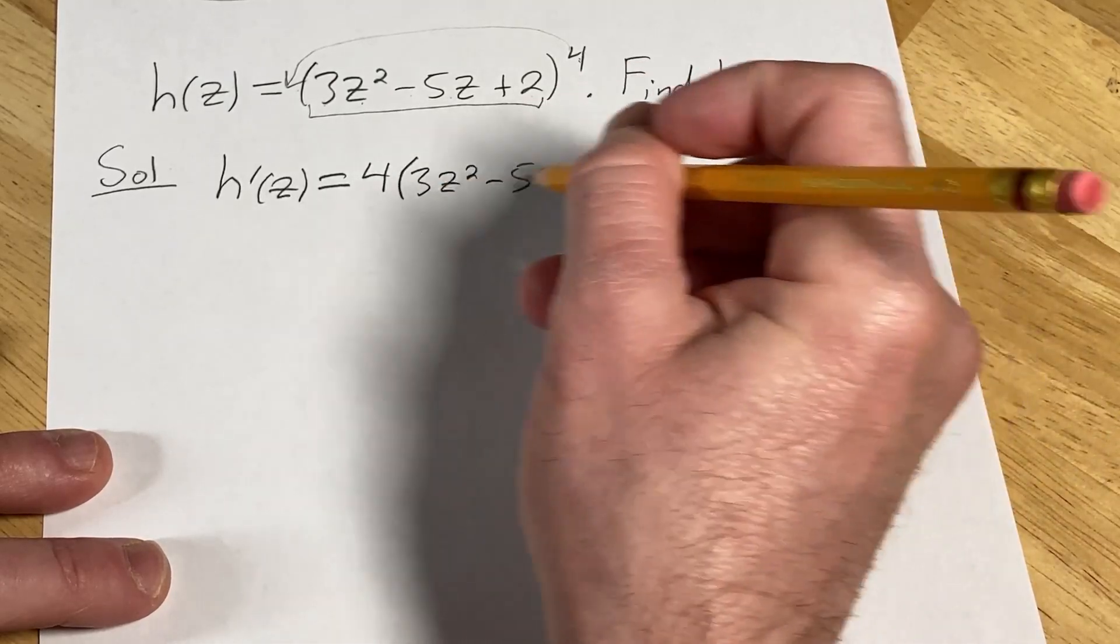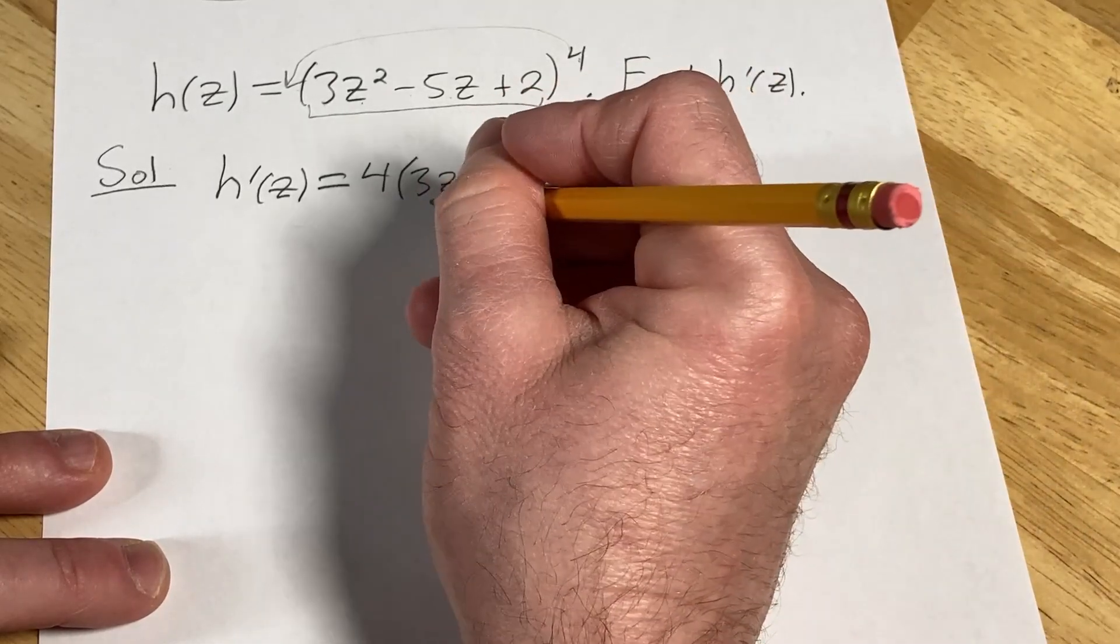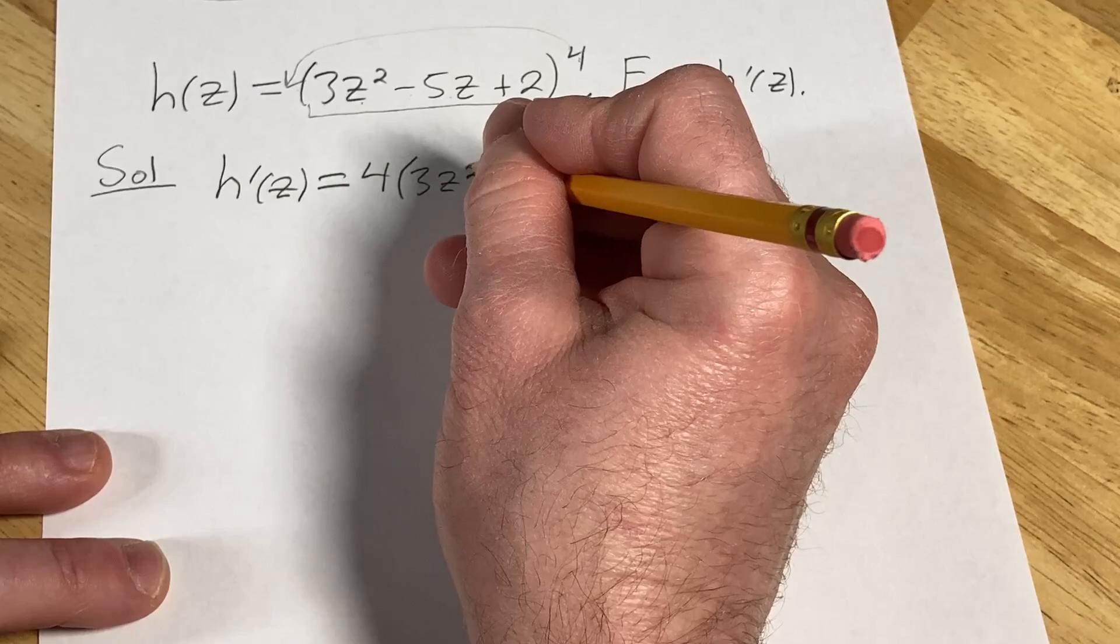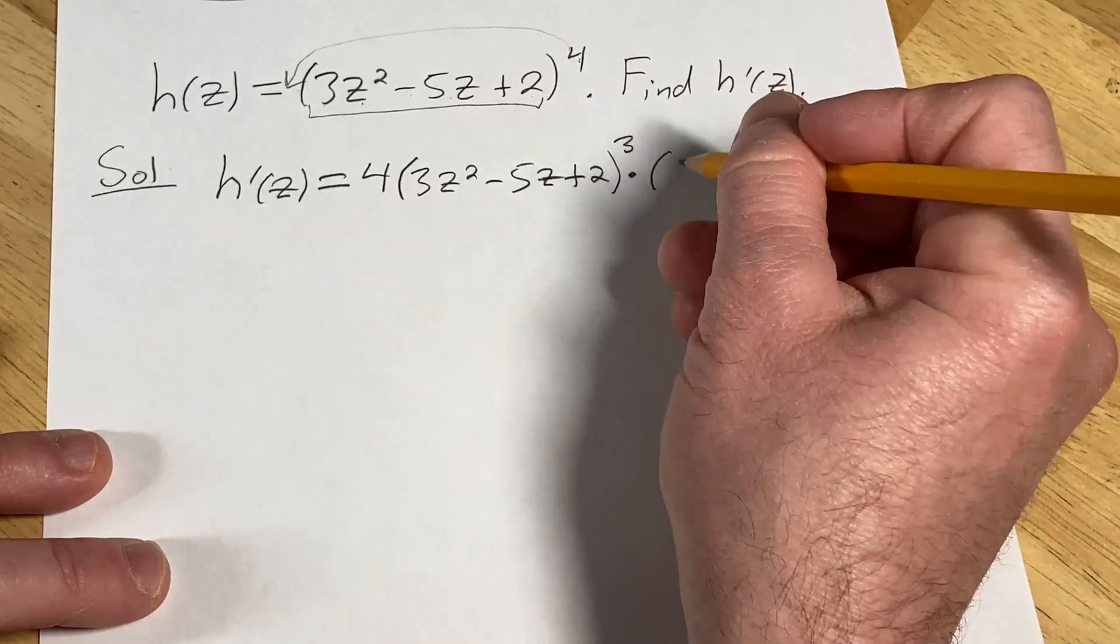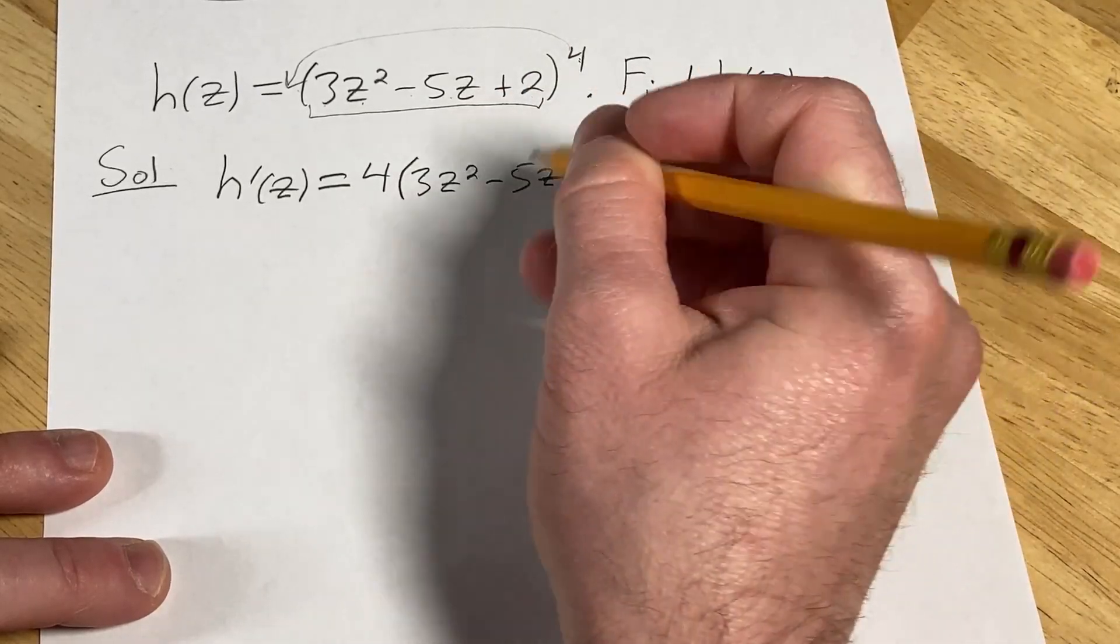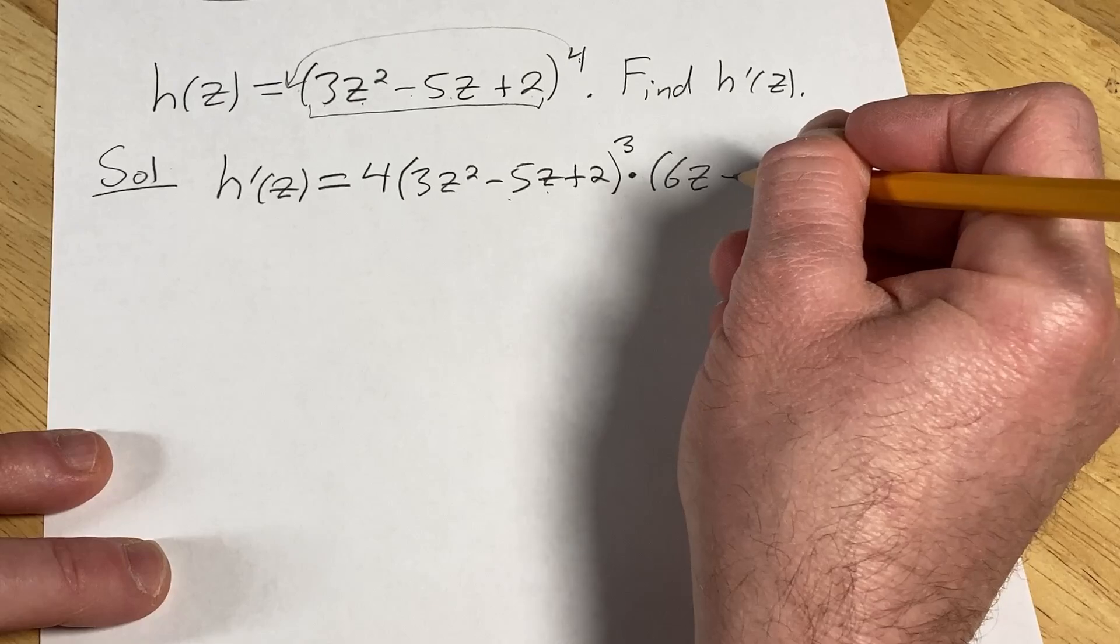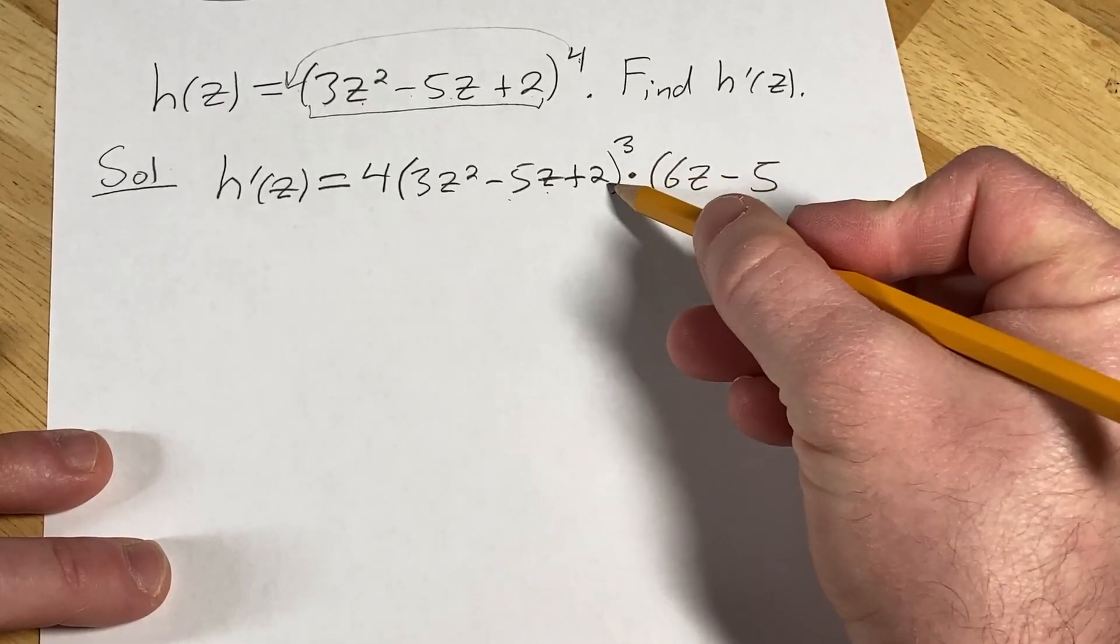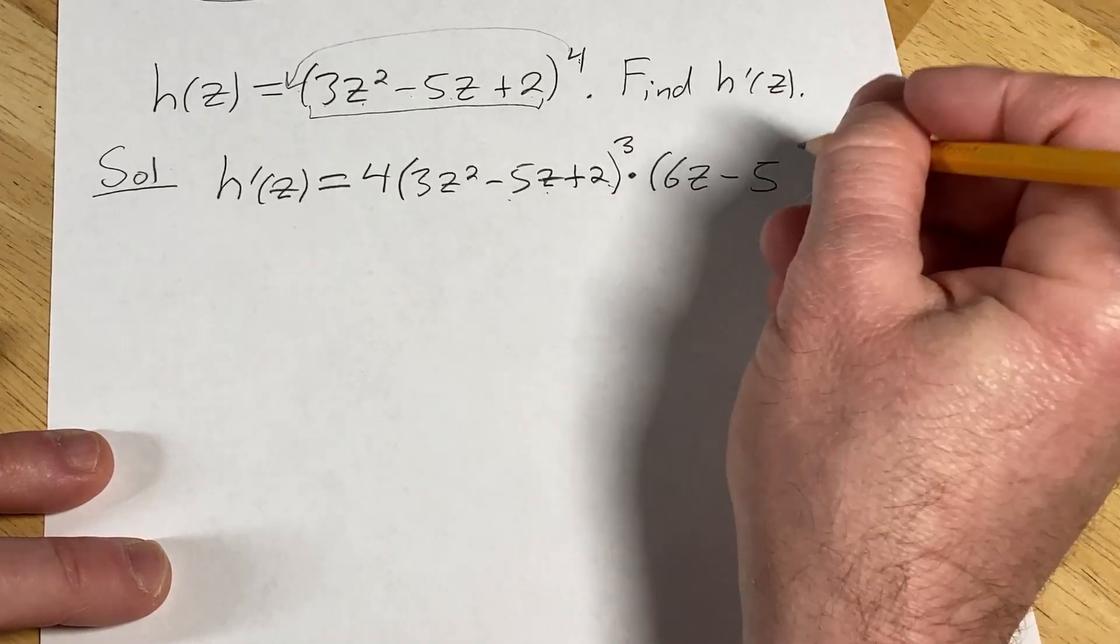And then you multiply by the derivative of your inside function. So here, again, you just use the power rule for these. So 2 times 3 is 6, so we get 6z. And then minus 5z, the derivative of that is minus 5. And the derivative of 2 is 0, so we won't write it.